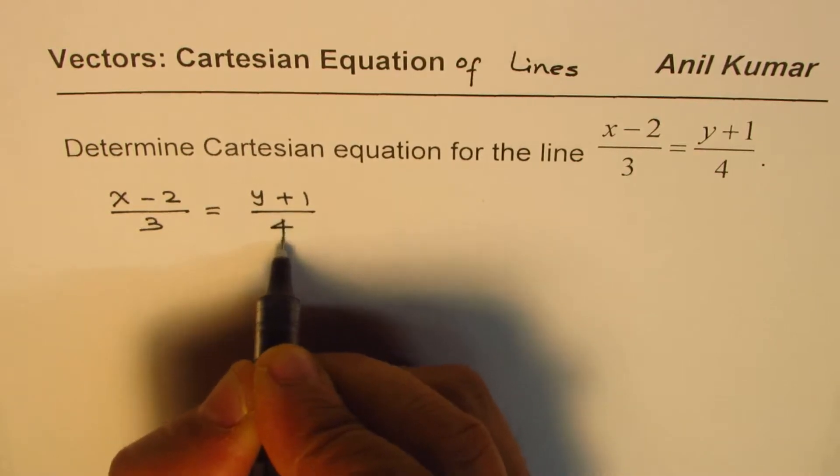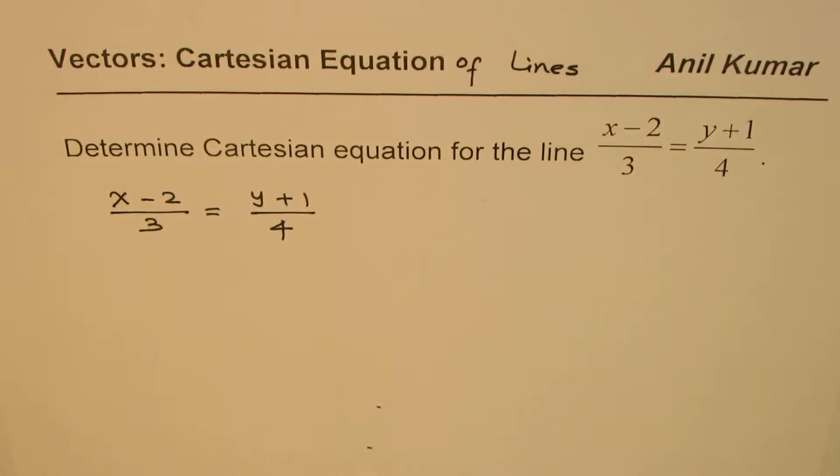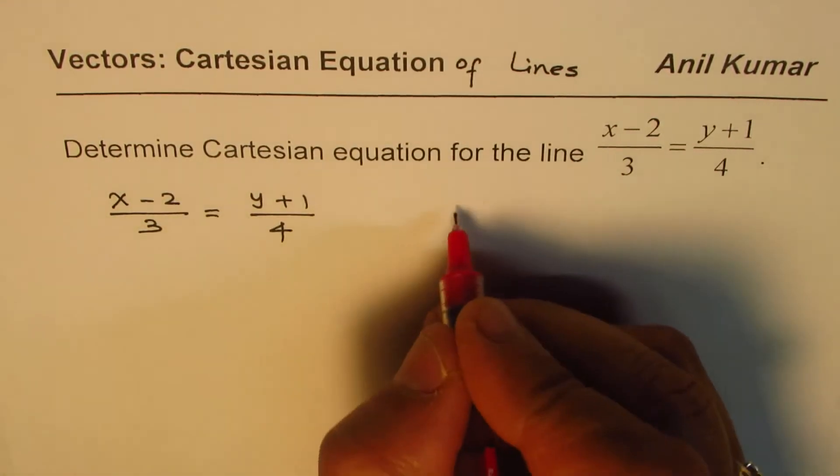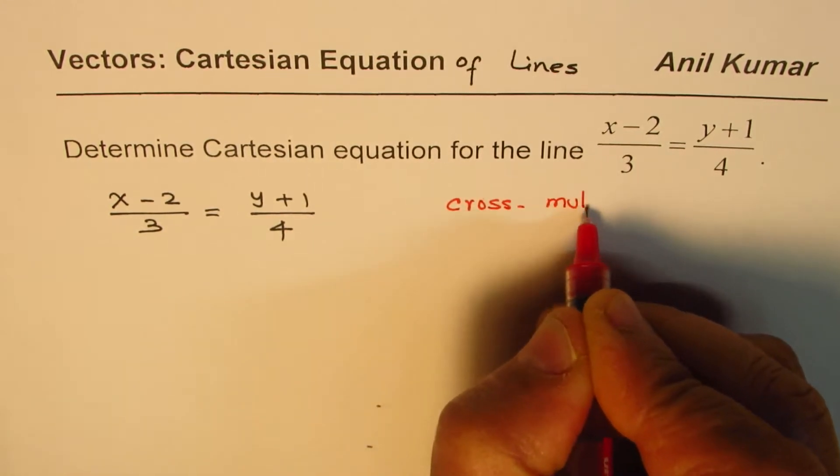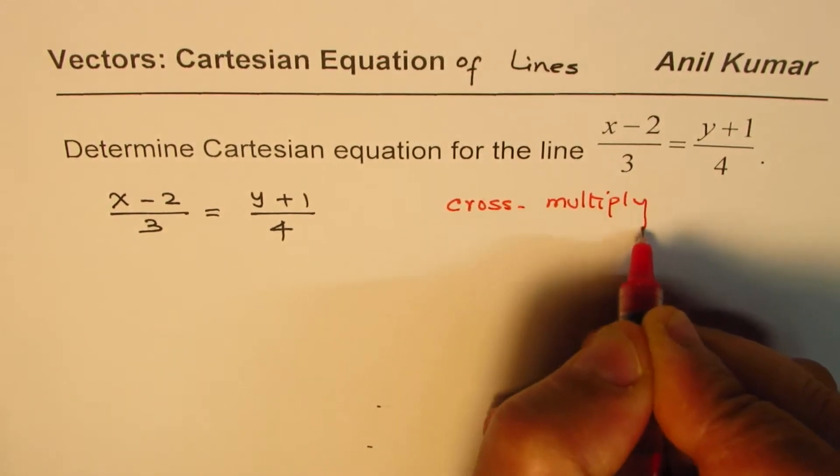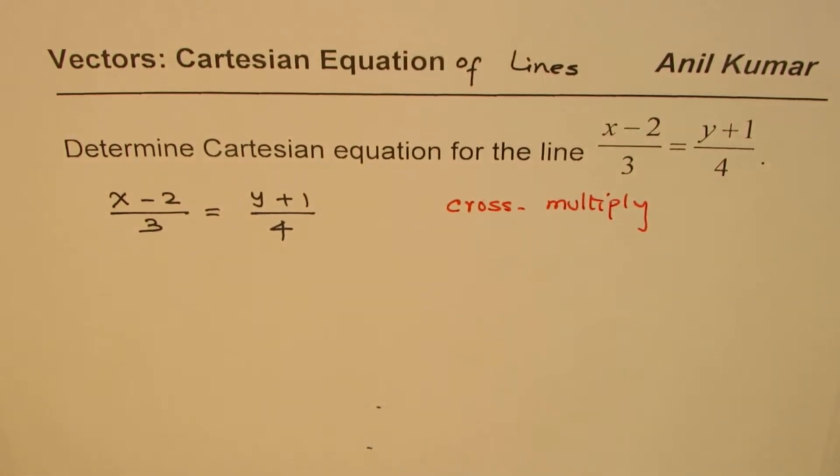We need to write this in Cartesian form or the scalar form. So what is the technique? The technique here is to cross multiply. This is a very important technique: cross multiply.